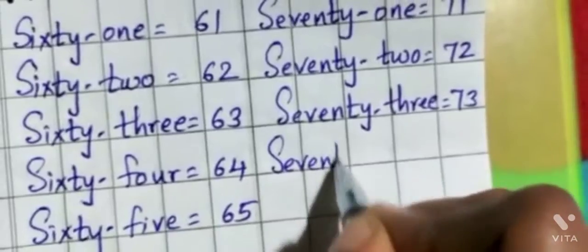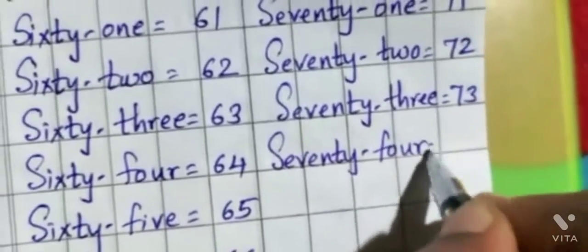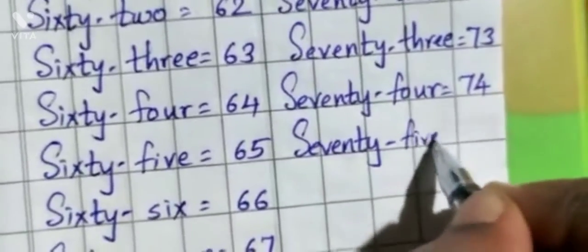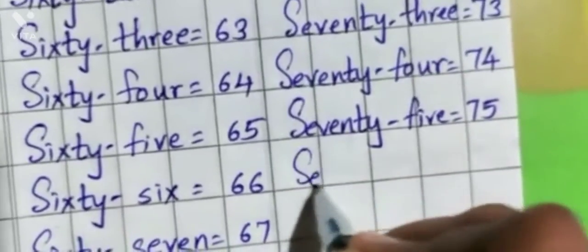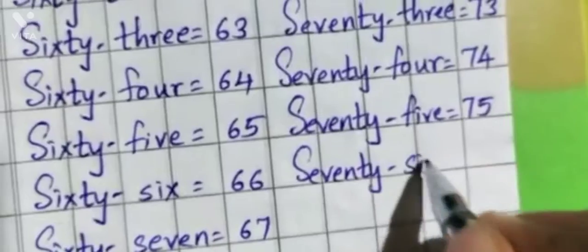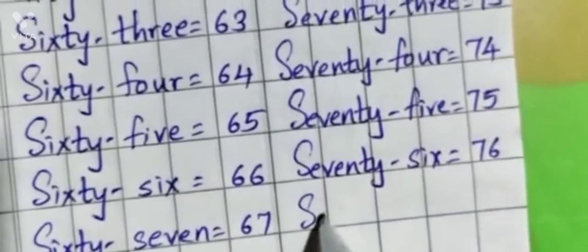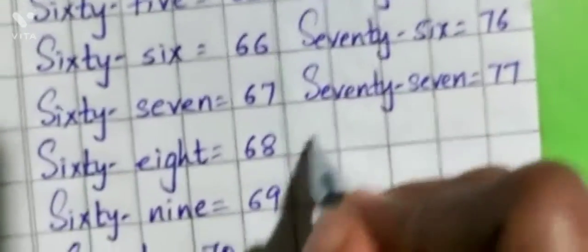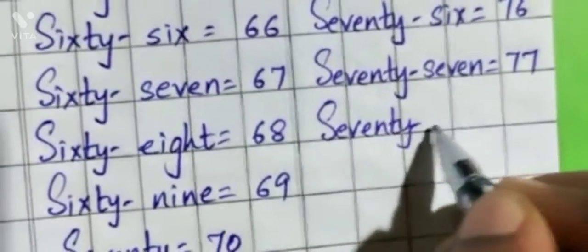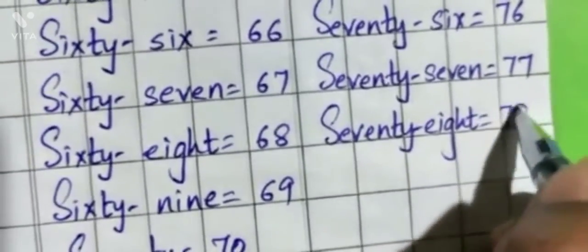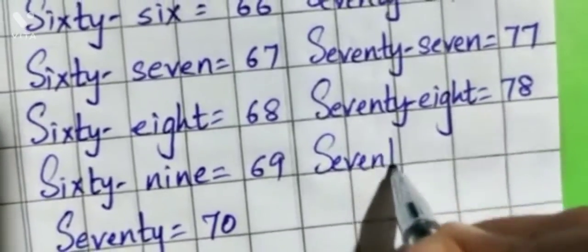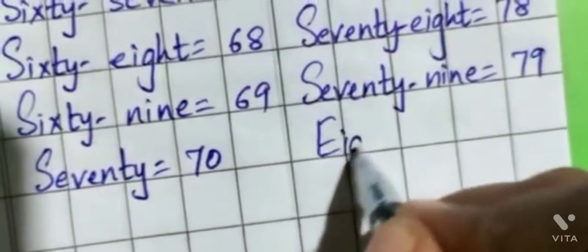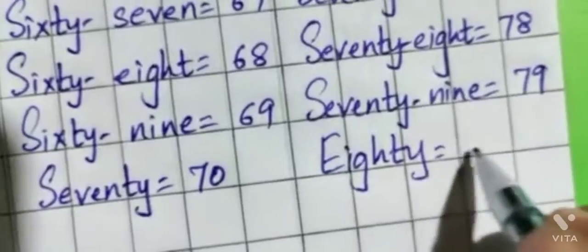S-E-V-E-N-T-Y-F-O-U-R, 74. S-E-V-E-N-T-Y-F-I-V-E, 75. S-E-V-E-N-T-Y-S-I-X, 76. S-E-V-E-N-T-Y-S-E-V-E-N, 77. S-E-V-E-N-T-Y-E-I-G-H-T, 78. S-E-V-E-N-T-Y-N-I-N-E, 79. E-I-G-H-T-Y, 80.